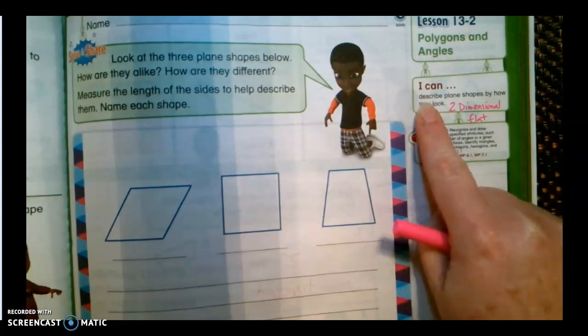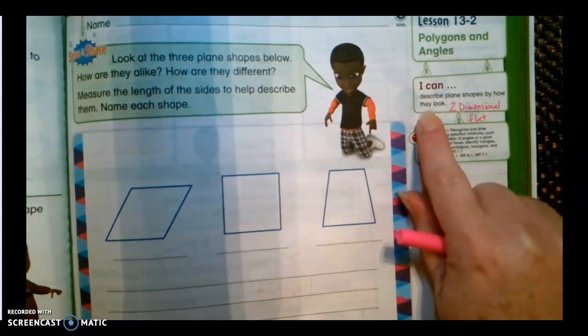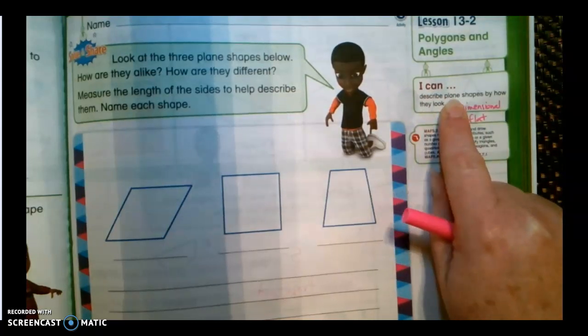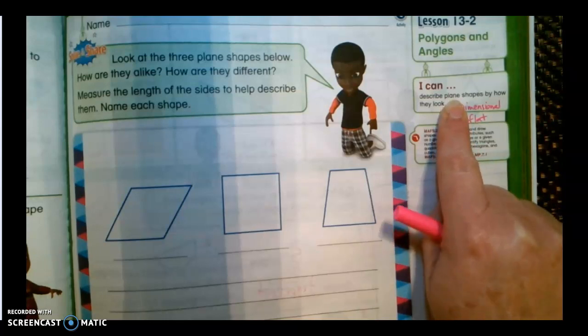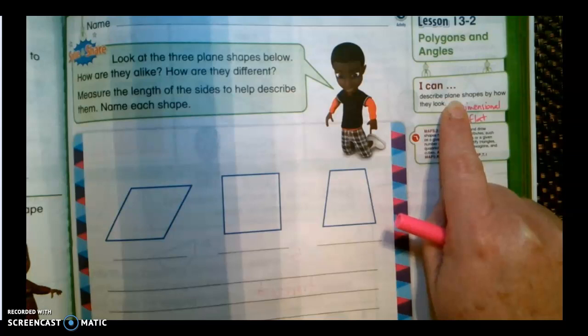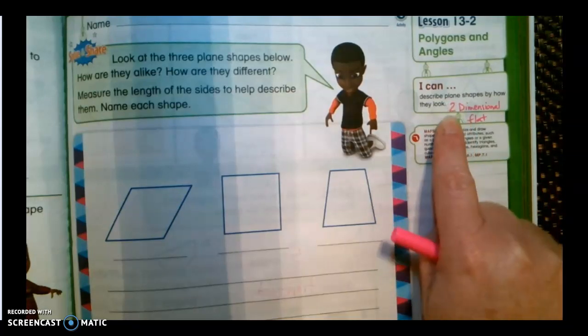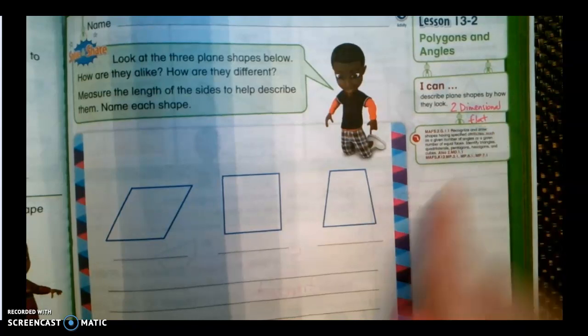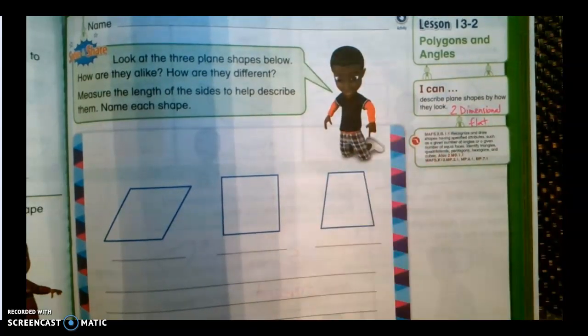A plane shape, I can describe a plane shape by how they look. The word plane, P-L-A-N-E, is spelled kind of like the airplane, not P-L-A-I-N, which means ordinary and boring. But this shape is actually a little bit ordinary and a little bit boring because it's two-dimensional or it's flat and I cannot pick it up. I can't hold it in my hand.